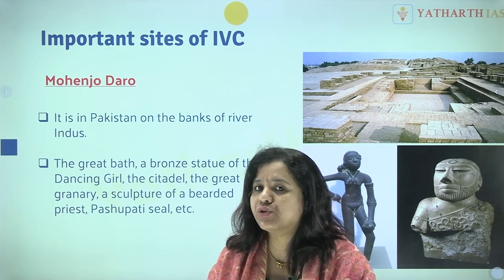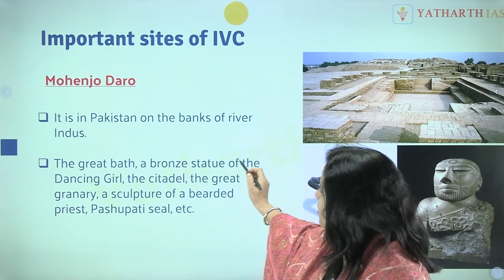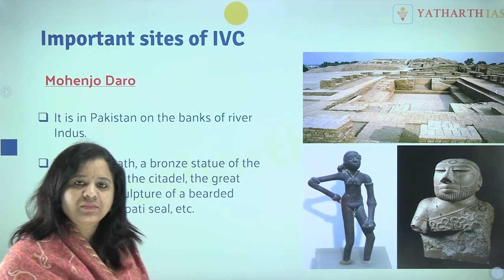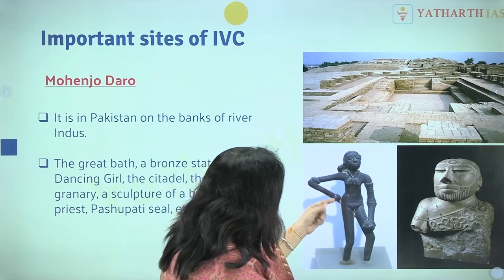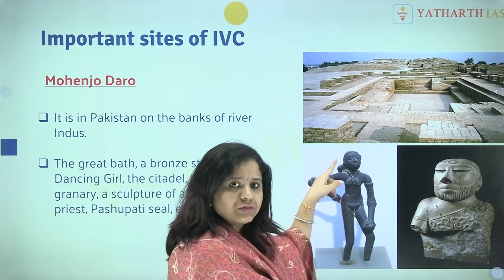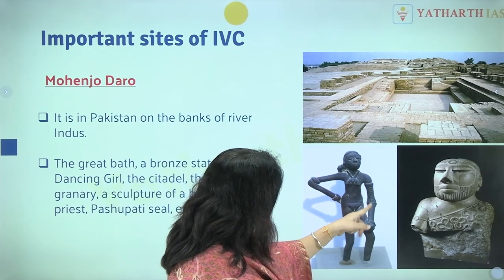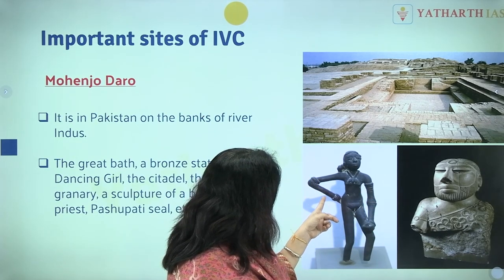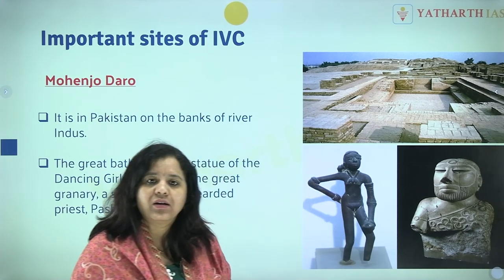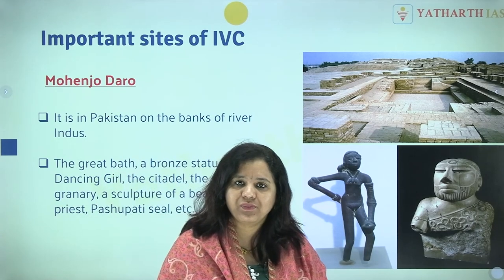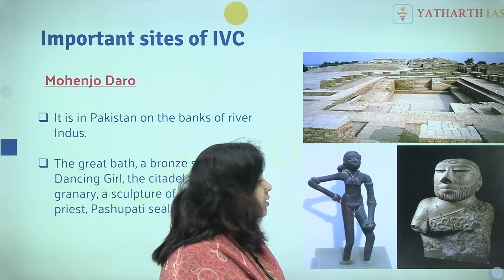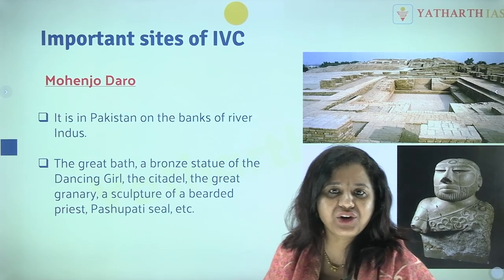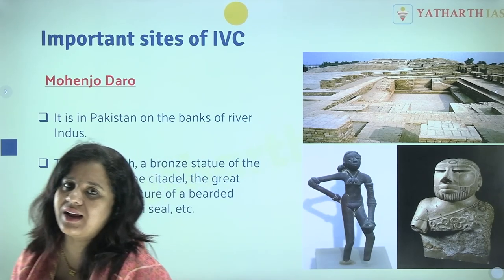In Mohenjo-daro, the bronze statue of the Dancing Girl was found. She is wearing an armlet, jewelry, and bangles on her full left hand, and jewels on her right hand. Look at her hairdo. This simply shows that dance was practiced, jewelry was used, and elaborate hairstyles were in practice in the Indus Valley civilization.